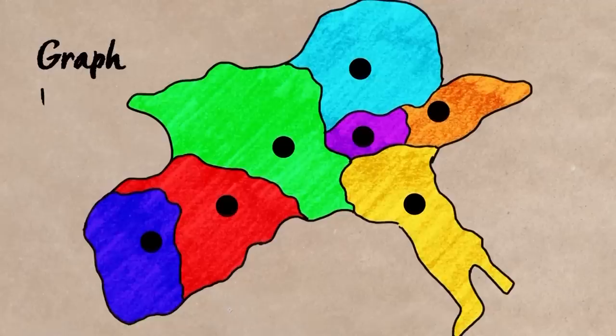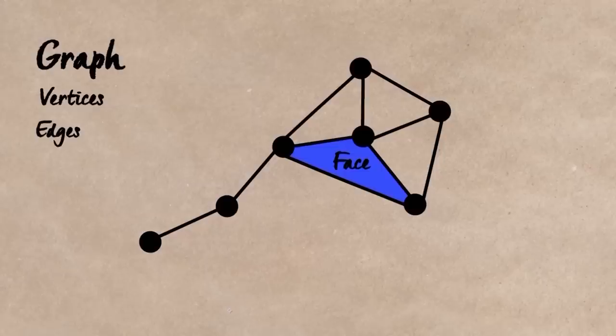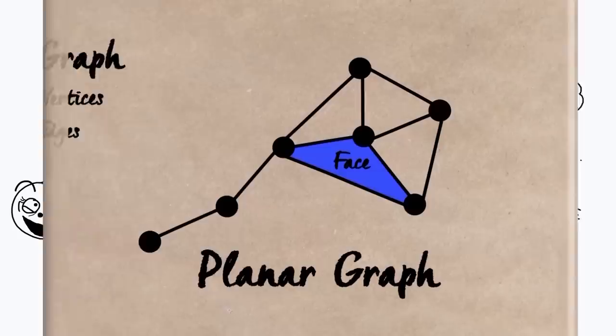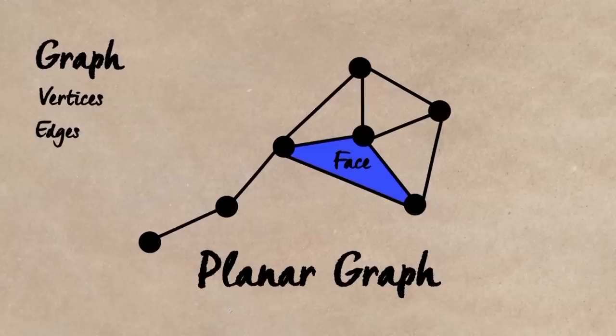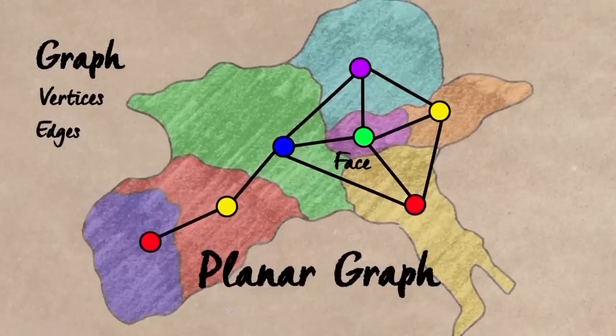So let's transform this map into what's called a graph. We can replace all the countries with dots or vertices, as they say, and all the borders with lines that we're going to call edges. When the edges and vertices form a closed loop, this is called a face. We may as well talk like graph theorists if we're going to be proving one of the hardest theorems in graph theory. This is what's called a planar graph, meaning that you can draw it on a piece of paper without any of the edges crossing each other. This is going to be important later. So now if we can color all the vertices of a planar graph using only five colors so that no two vertices sharing an edge are the same color, we've solved the five color theorem. This is exactly the same model as the map from before, just in a nice neat little package of dots and lines and no delicious baguettes or pizza to distract us.